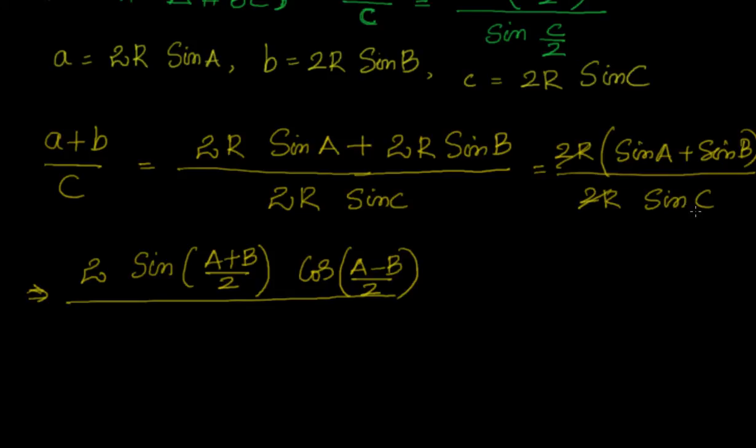since we have sin C, we will convert that also into half angle. It will become 2 sin(C/2) cos(C/2).